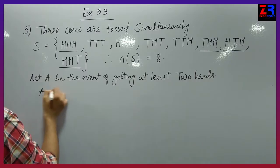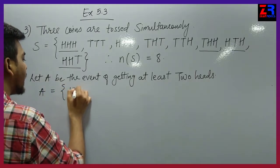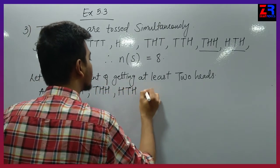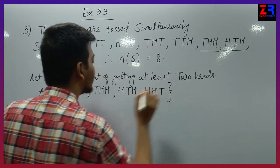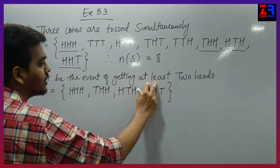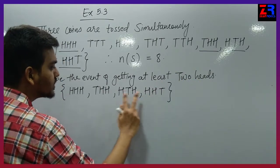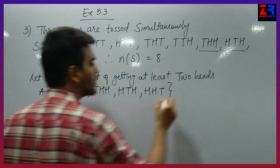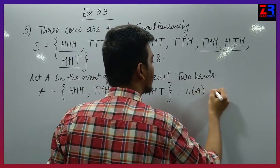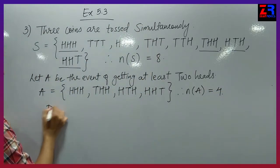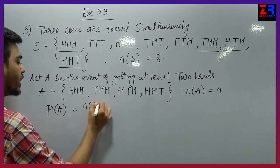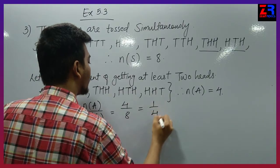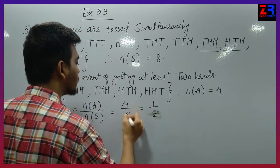So A equals to {HHH, THH, HTH, HHT} — at least two heads means two or more than two: two heads, two heads, two heads, and more than two means three heads. Therefore N of A equals to 4, and probability of A equals to N of A upon N of S = 4 upon 8 = 1 upon 2.